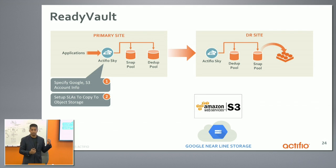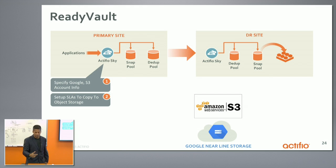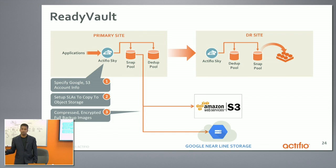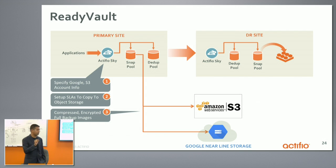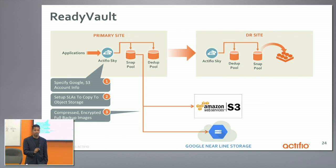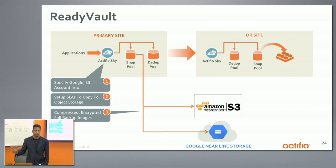This is just another checkbox where you say: take the data and put it into ActiveVault in object storage. Once you do that, what ActiveView does is it takes the data — native data, not the deduplicated data, native data — and compresses it and sends it to the object storage. It stores it encrypted, transports it encrypted, so data is safe and secure. The key thing is that we are picking the data from the snapshot pool, which means that the data is in its native format.